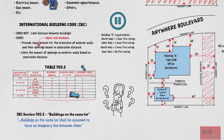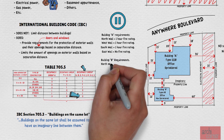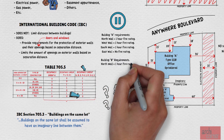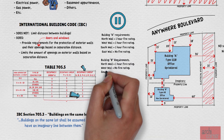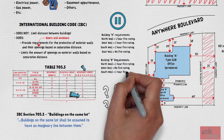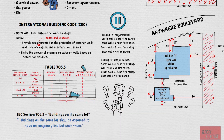Now we follow the same process for Building B — you can pause and test yourself to figure out what the requirements would be. Now you know how to figure out the fire ratings required in a building depending on the building's proximity to the property lines and other buildings.